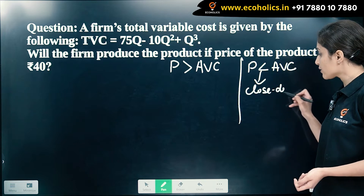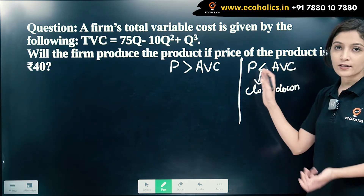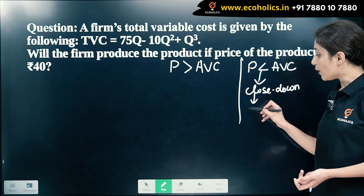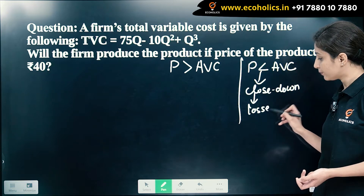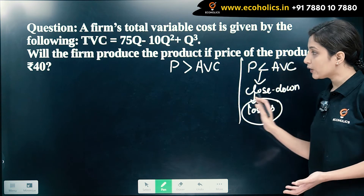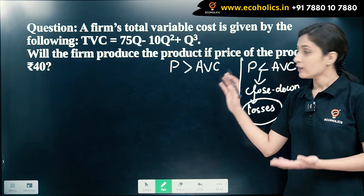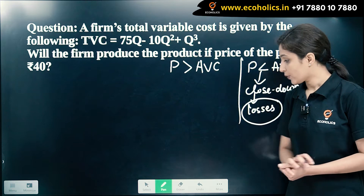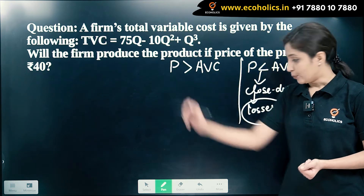Why should it close down? When price is less than average variable cost, the firm will be incurring losses. Only when the price is greater than average variable cost will the firm produce output. Using this concept, let us understand this example.